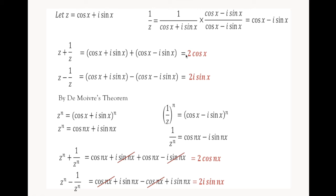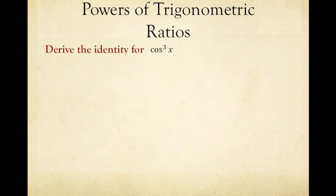These are the important identities we will be using in deriving the powers of cosine and sine x. For the power of cosine x, we use z plus 1 over z equals 2 cosine x, and z to the power of n plus 1 over z to the power of n equals 2 cosine nx.